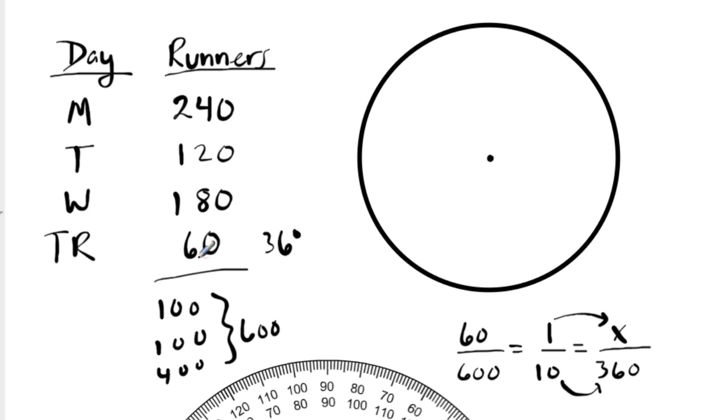On Thursday, we have a 36 degree angle. And notice that helps me a lot, because I can next think about Tuesday. Without doing any more calculations, I know that there are twice as many runners on Tuesday. So there should be twice as many degrees. Or 72 degrees.